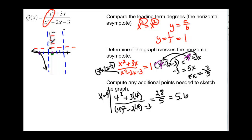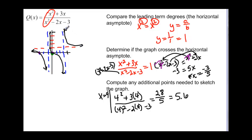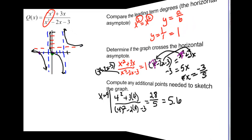The graph has to come through the y-intercept, get over to the vertical asymptote at x = −1 and switch sides, then come back on the other side. It doesn't cross the horizontal asymptote again after x = −3/5, so it stays above that horizontal asymptote on the right side.